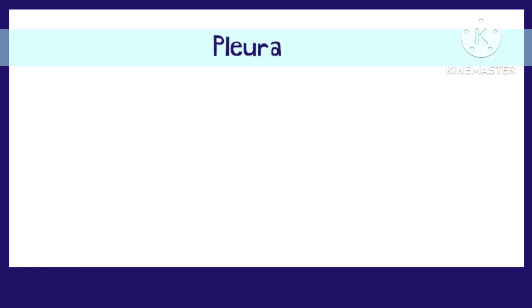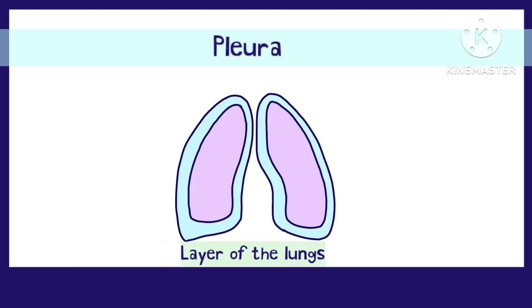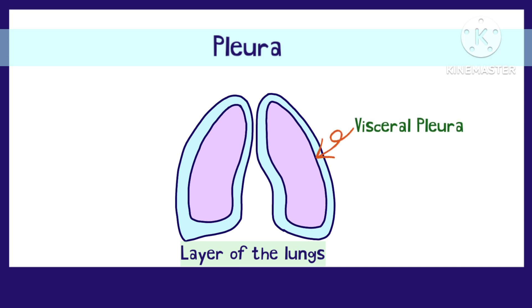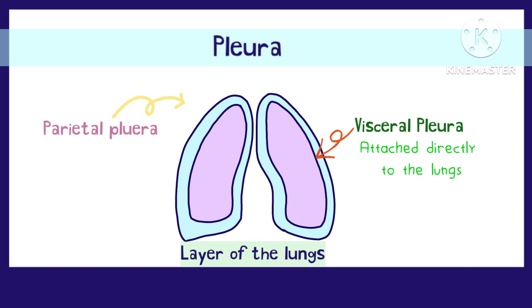The pleura that we are talking about is the layer that covers our lungs. It consists of two parts: the visceral pleura, attached directly to the lungs, and the parietal pleura, attached to the ribs.